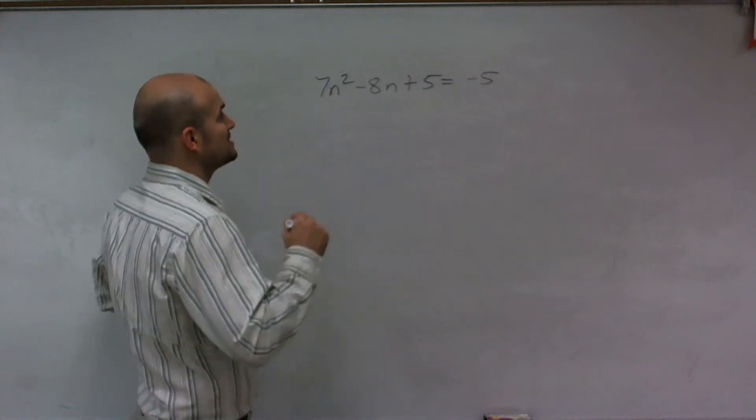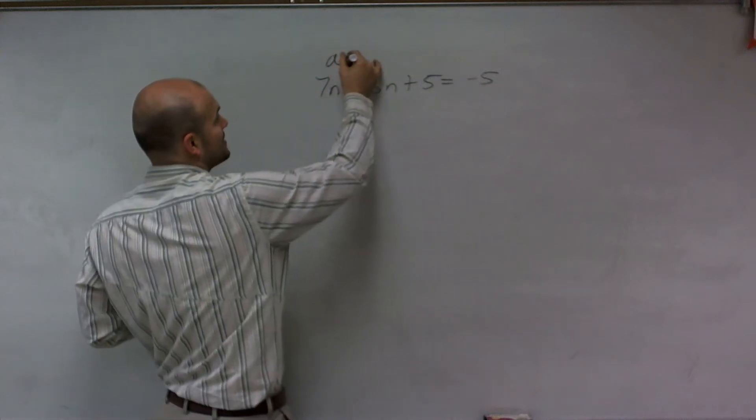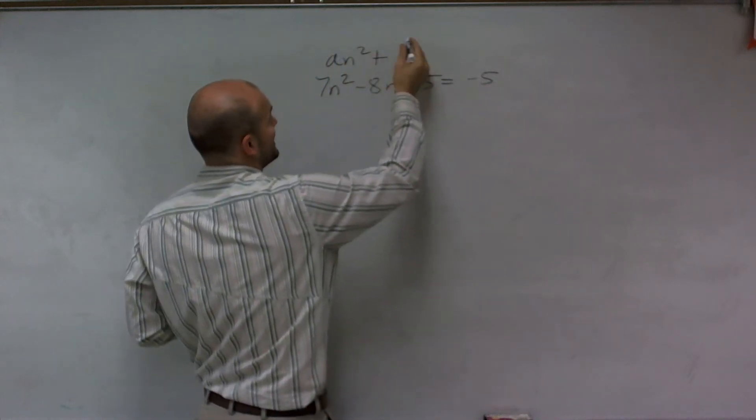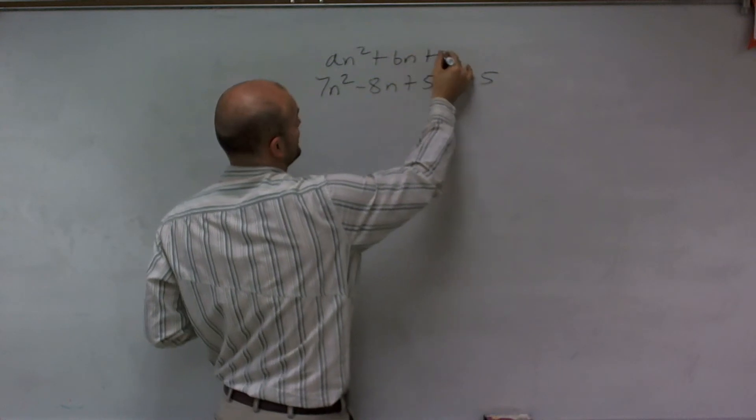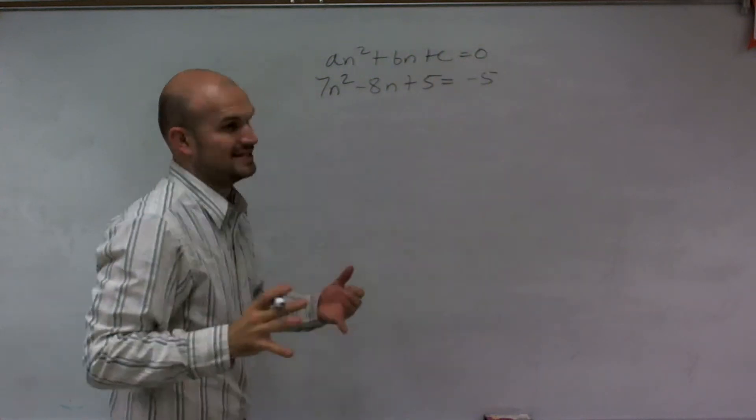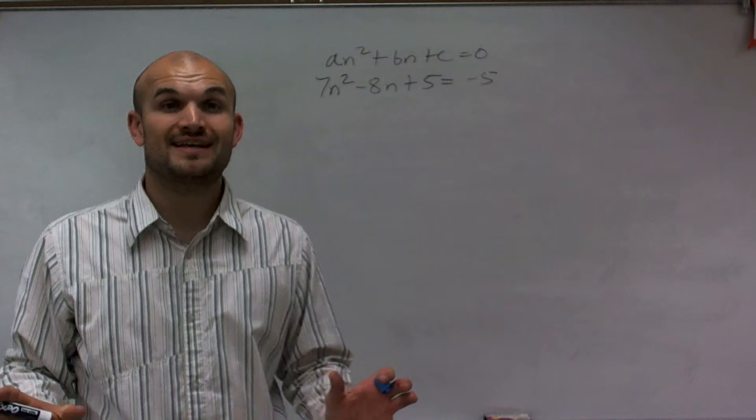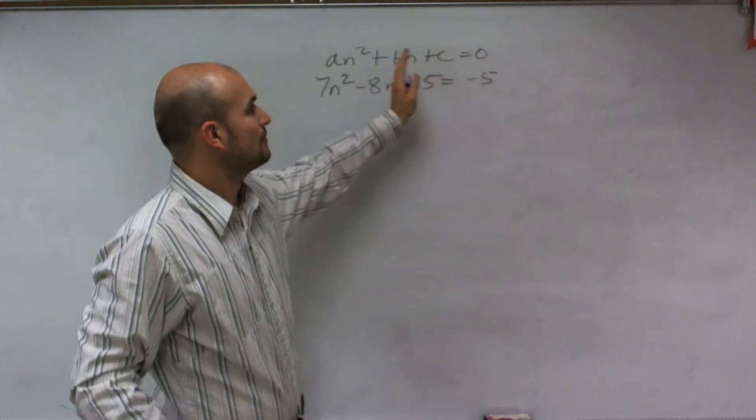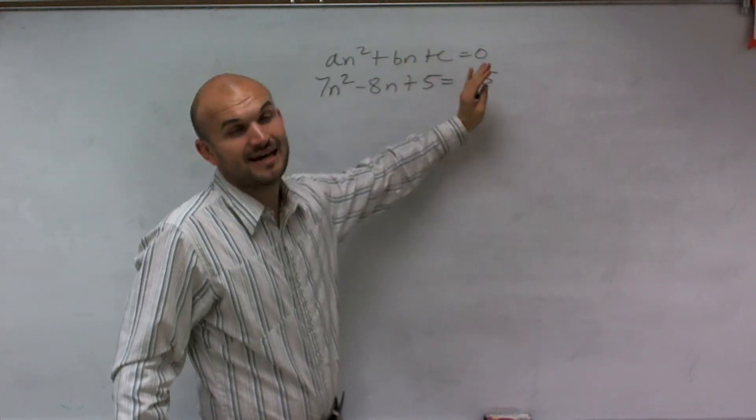So the first thing we actually need to do is put this in quadratic form. Quadratic form would be an squared plus bn plus c equals 0. And that's really important. We want to make sure before we even find the discriminant that we have these identified by our a, b, and c. And that means we have to have it set equal to 0.